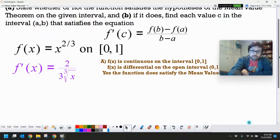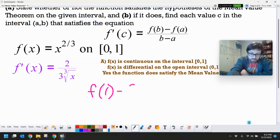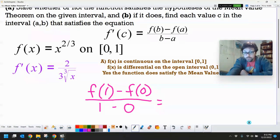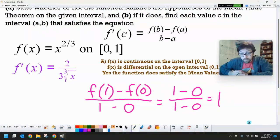So that's a matter of putting our two endpoints in of one minus f of zero over one minus zero. Trying to figure out what our average rate of change is from zero to one. The calculations are very exciting. It's one.